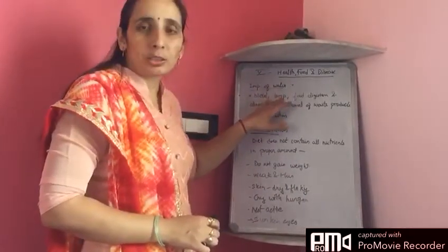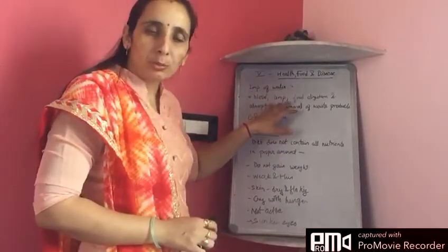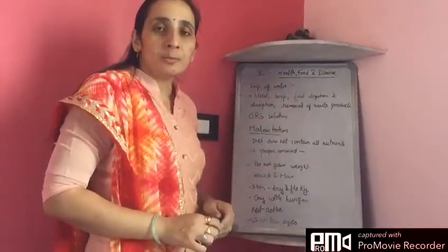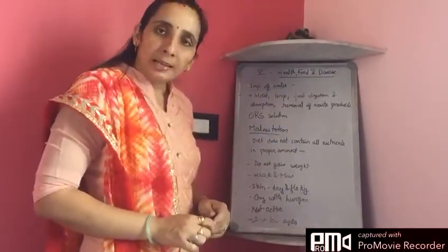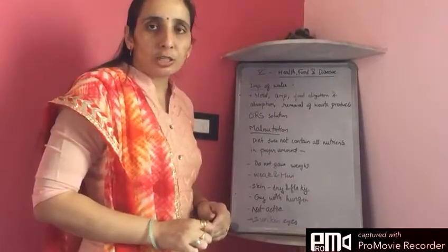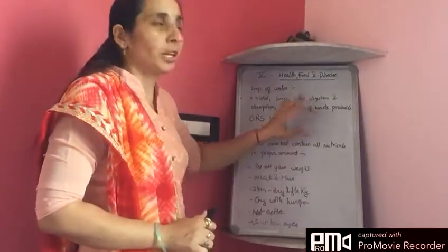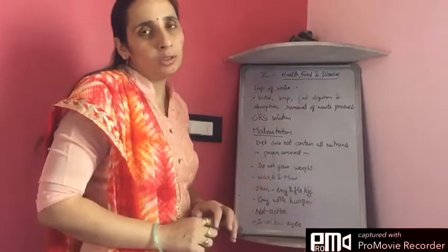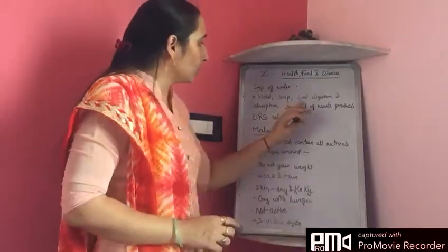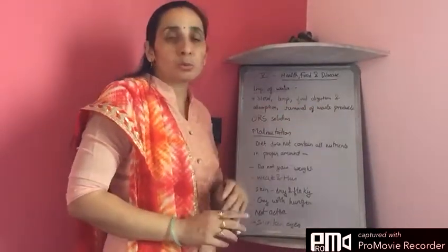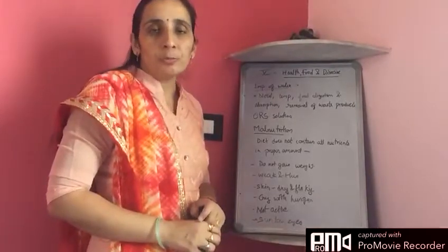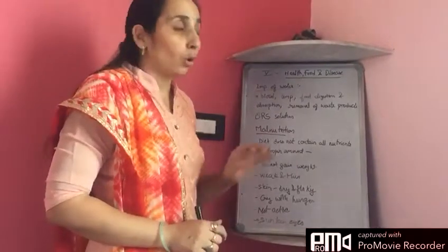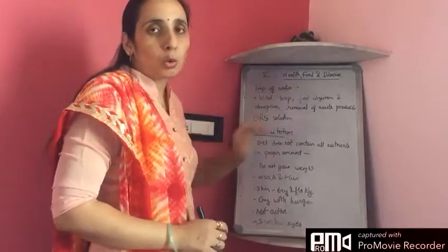Water is a very important component of blood. Water helps to maintain and balance our body temperature. Another thing water does is it helps with food digestion and absorption. Food digestion and absorption occurs in the presence of water. Removal of waste products from our body in the form of urine or sweat is also done with the help of water.